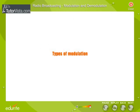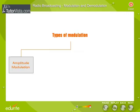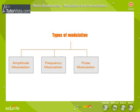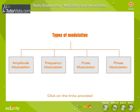Types of modulation: In modulation, the carrier wave is processed in such a way that its amplitude, frequency, or some other property varies. Thus, modulation can be classified as Amplitude Modulation, Frequency Modulation, Pulse Modulation, and Phase Modulation.